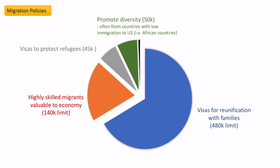The last group is humanitarian relief. When natural disasters occur, temporary visas — which can vary each year — are given to people going through natural disasters and political crises that the USA is willing to support temporarily. People would then have to return once those visas have expired.